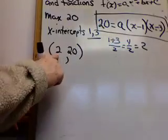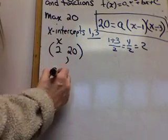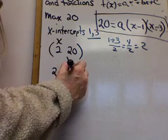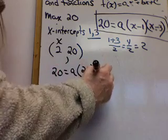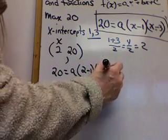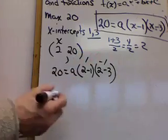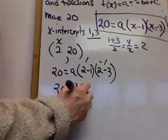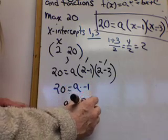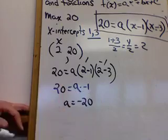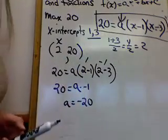So now I can take this equation and solve it for a, because I knew the 20 went there. Where do you think the 2 goes? It's the x value. So now I do 20 equals a times 2 minus 1 and 2 minus 3. 2 minus 1 is 1, 2 minus 3 is negative 1, so 20 equals a times negative 1, so a equals negative 20. So that's the number that goes there in this particular equation.